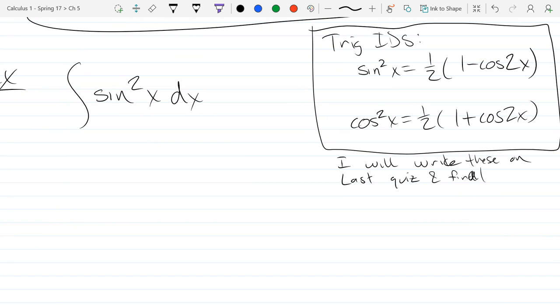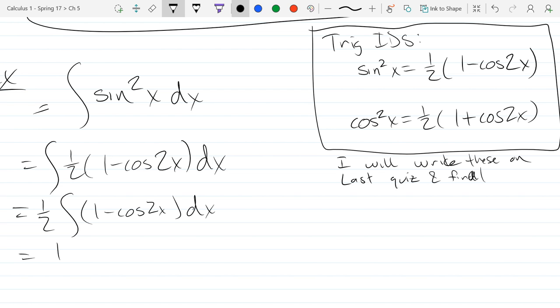So I'm just copying down the right side here, that 1 half, 1 minus cos 2x. And that half could be brought out front. So anti-derivative of 1 is easy to do. That's just x.